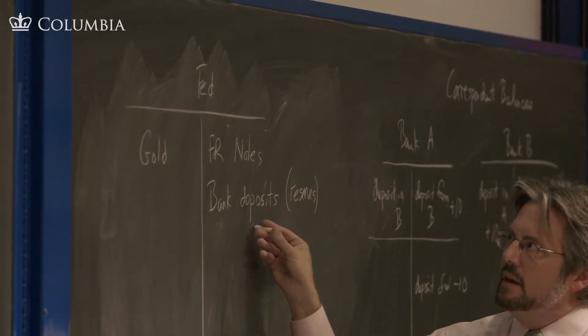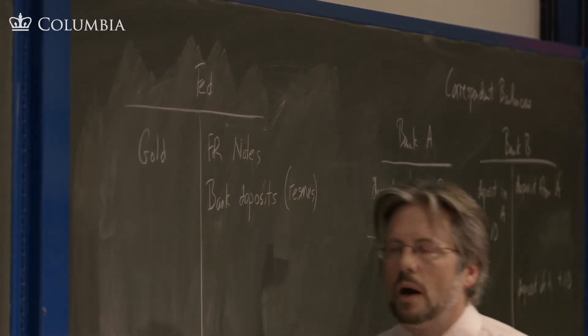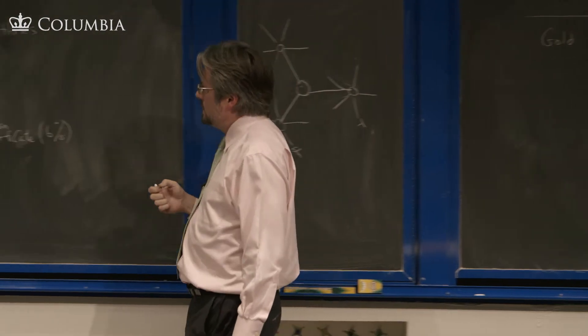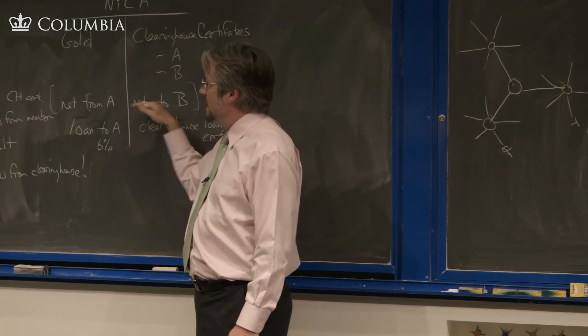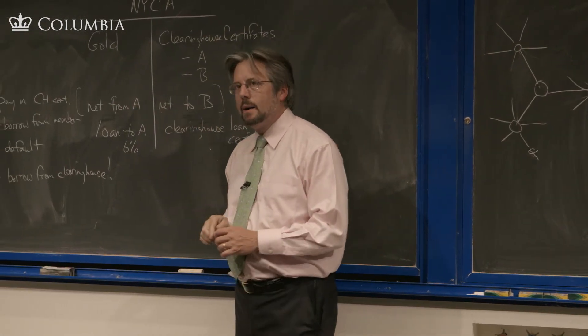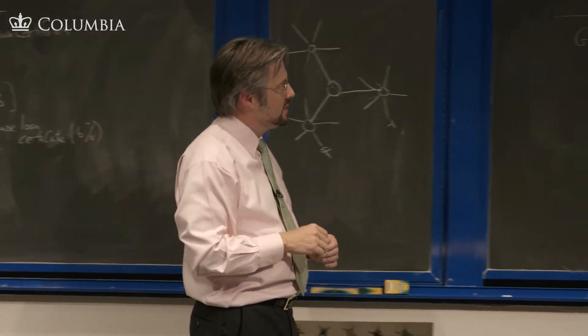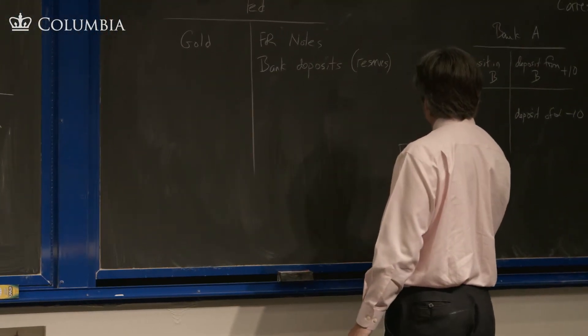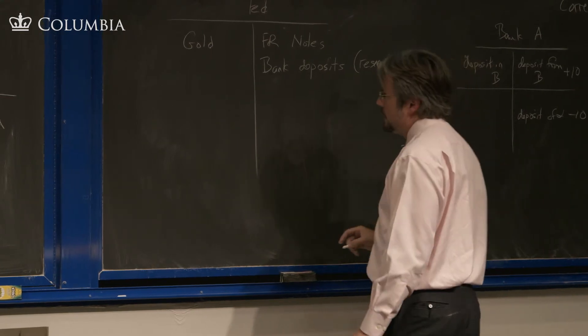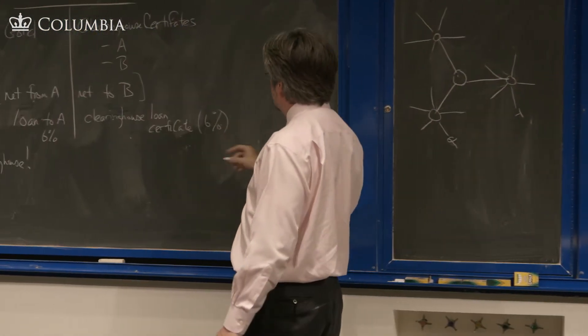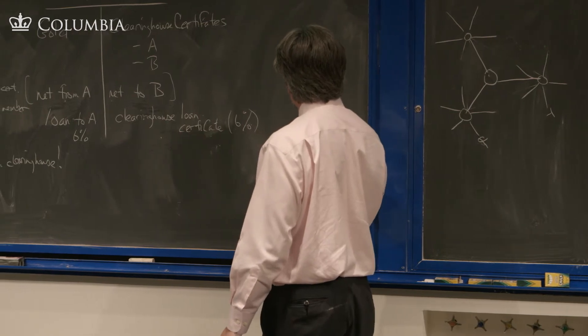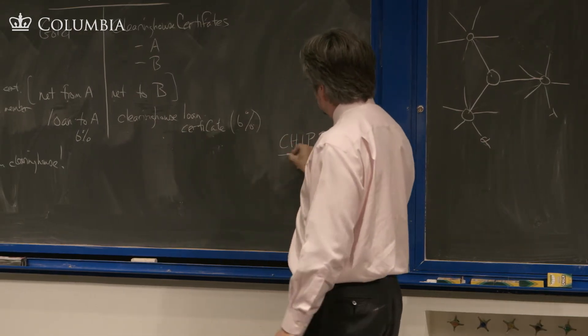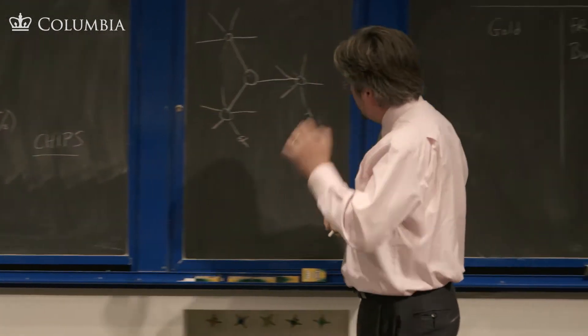And the Fed also can run some credit intraday on its own books, something called Fedwire. That's what it's called now. Now it's electronic. By the way, this clearing system is called CHIPS now. You'll read about that in Stigum.